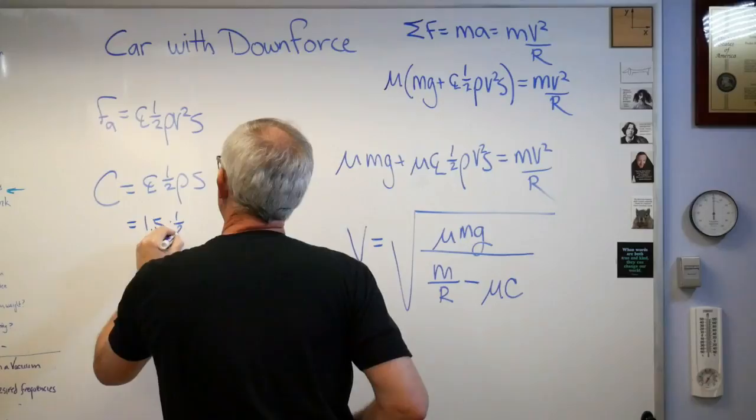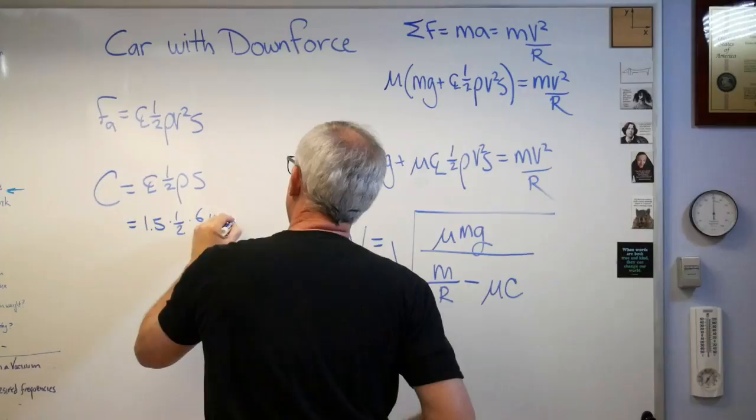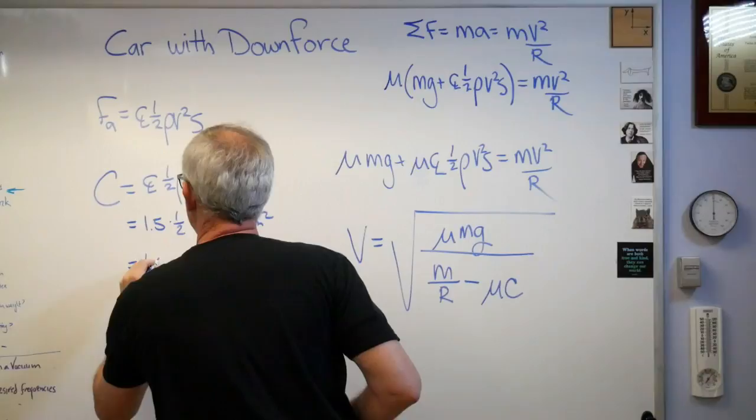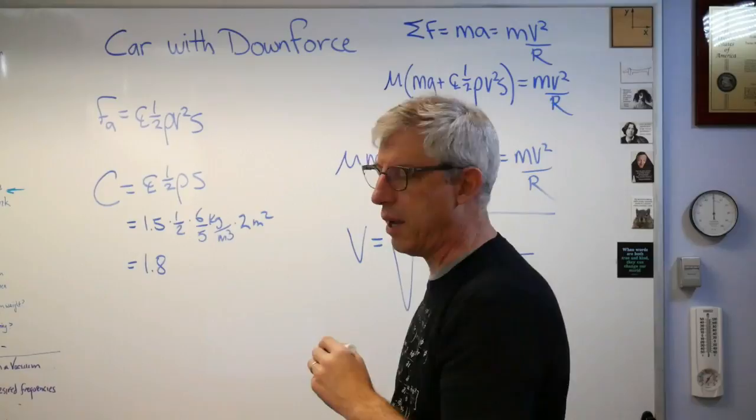If you work this out, say 1.5 times one-half times six over five kilograms per meter cubed times two meters squared, that turns out to be 1.8, and it's a really funny unit. The way this works out, let me double check here. Yeah, it's kilograms per meter.